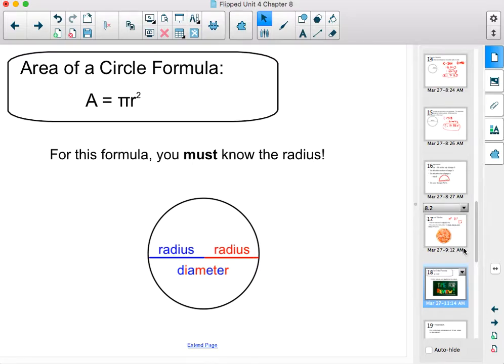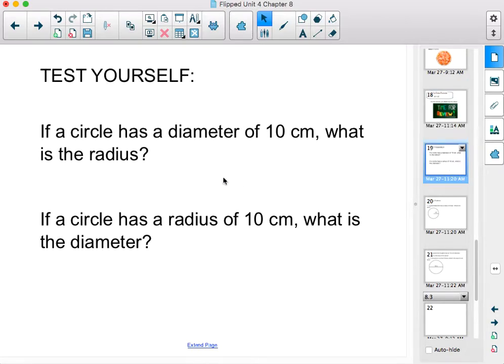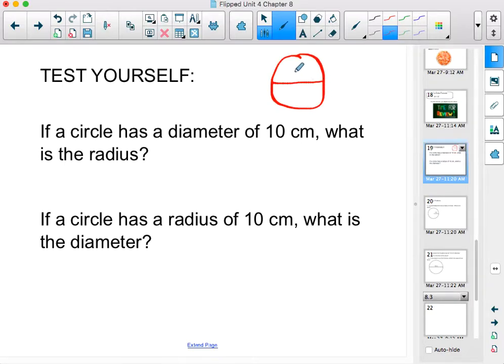So every diameter is equal to two radii. So let's see if we can figure out some questions here. If a circle has a diameter of 10 centimeters, then what will the radius be? So if the diameter is 10, the whole way across, that's 10 centimeters, then what is the radius? Well, the radius is half of that. So the radius will be 5 centimeters. I hope you knew that.